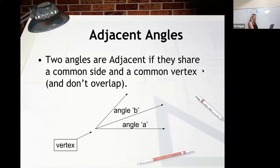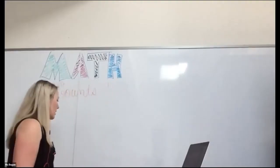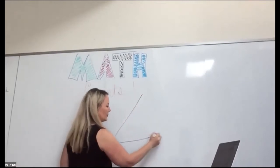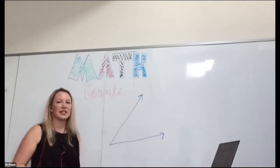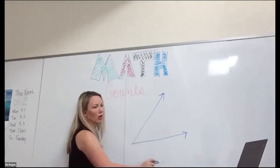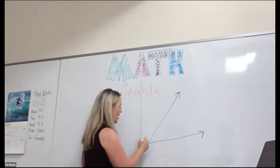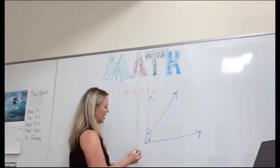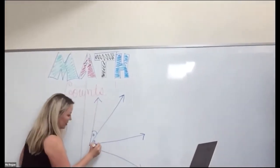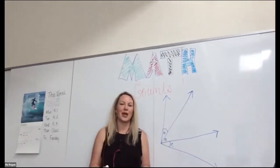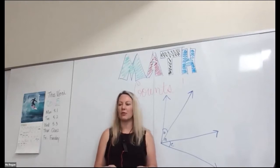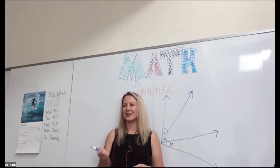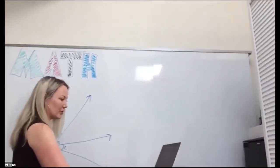Let's take a look at this on the board. An adjacent angle does not have to be on top or on bottom — it can be on either side. So if this is angle A, angle B is an adjacent angle to angle A. And if I drew another angle here, angle C is also an adjacent angle to angle A. Any questions before we move on? This is probably a review for most of you from last year, but feel free to shout anything out.